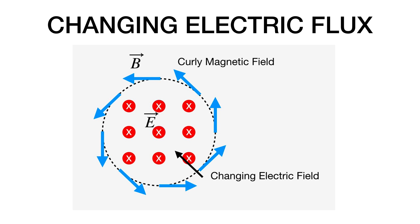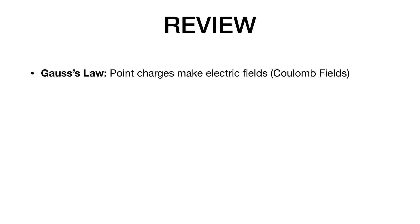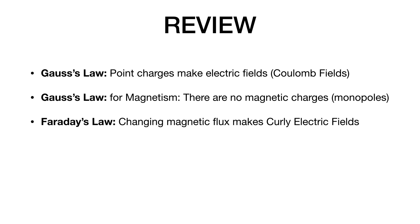Okay, let's review. And then we have one more thing. So, Gauss's Law. Electric point charges make electric fields. We call these Coulomb fields. Next, Gauss's Law for magnetism. And I just realized I bolded that wrong, but you get the idea. There are no magnetic charges. There are no magnetic monopoles. There are no Coulomb-like magnetic fields. There's no magnetic fields that radiate from a point. That just doesn't happen.